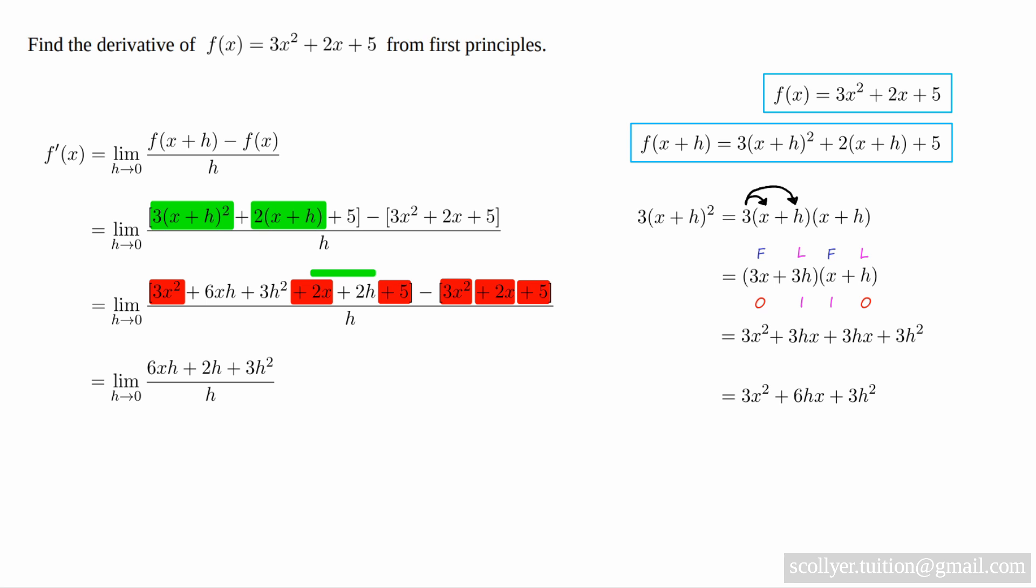To give us the limit as h tends to zero of (6xh + 2h + 3h²) / h. We note that we have a common factor of h in each of the terms in the numerator, which we can factor out to give us the limit as h tends to zero of h(6x + 2 + 3h) / h.